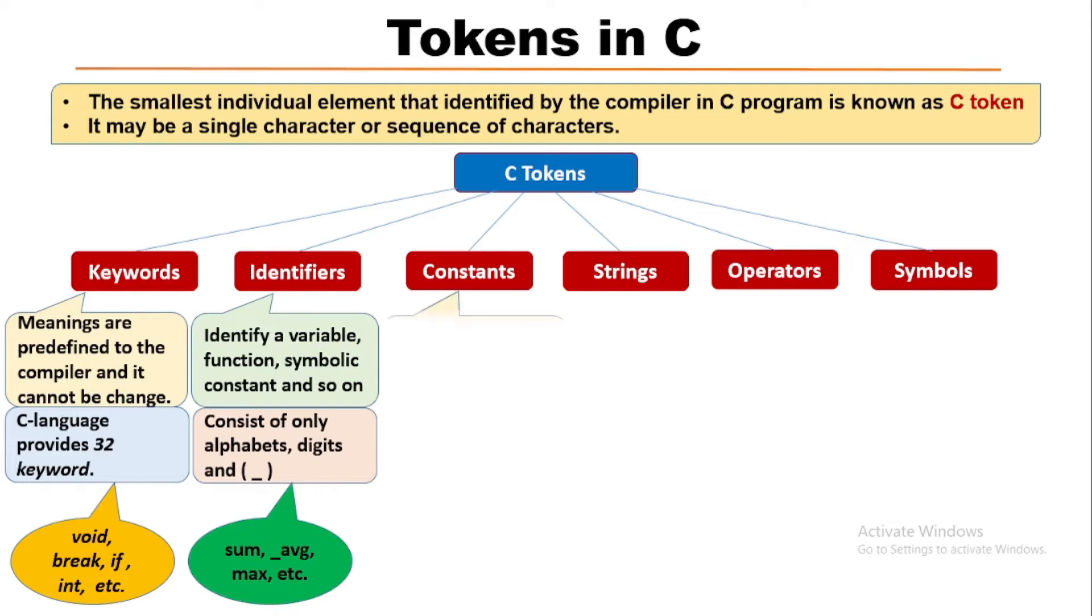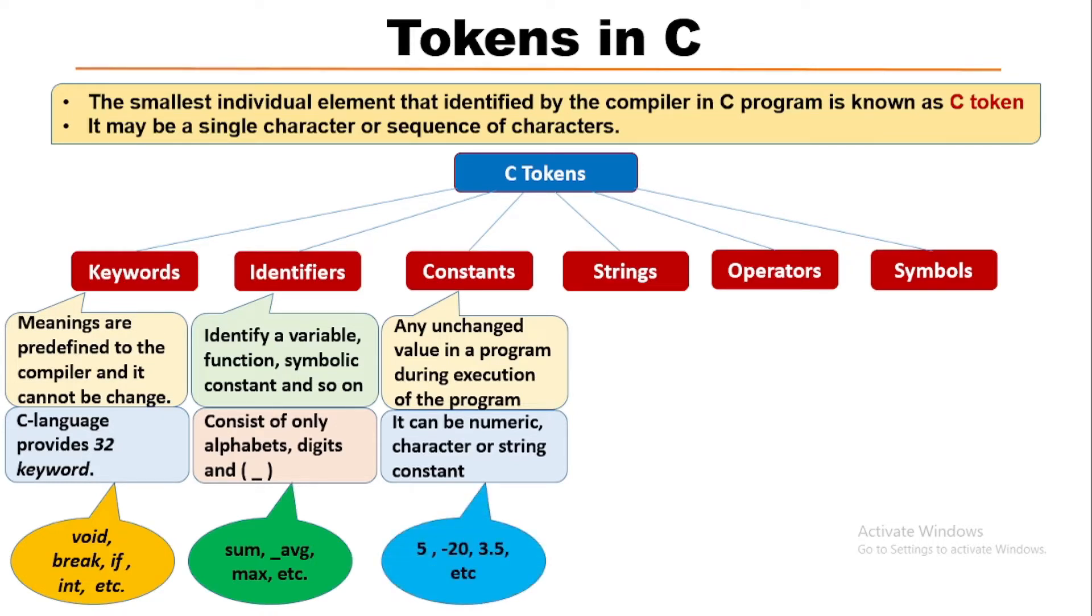Then constant. A constant is a value that cannot be changed during execution of the program. There are three types of constants: numerical, character, and string constant. Examples of constants are 5, minus 20, 3.5, etc.